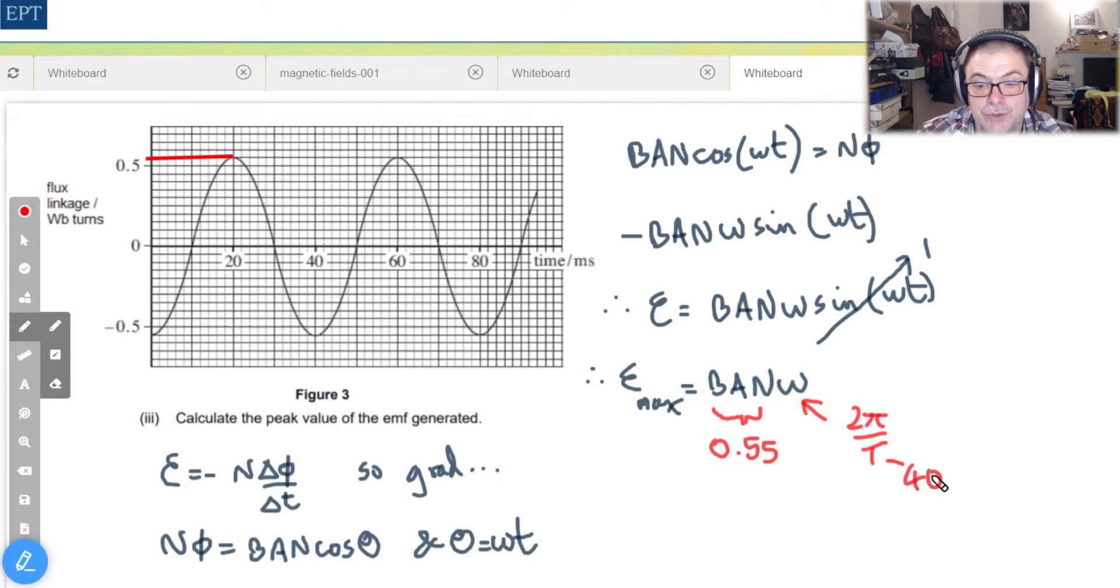And ω of course is just 2π over T the period, which of course we know is 40 milliseconds.